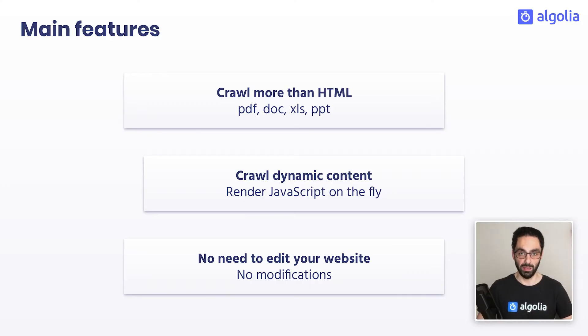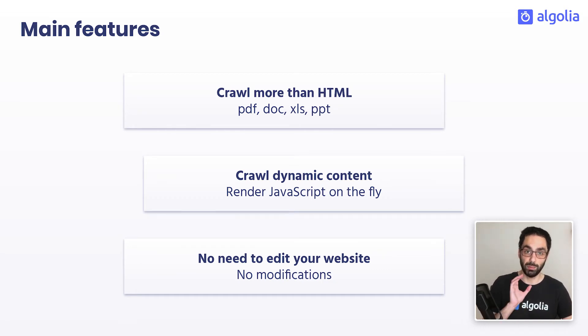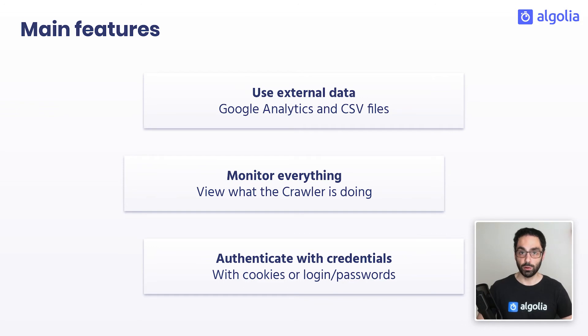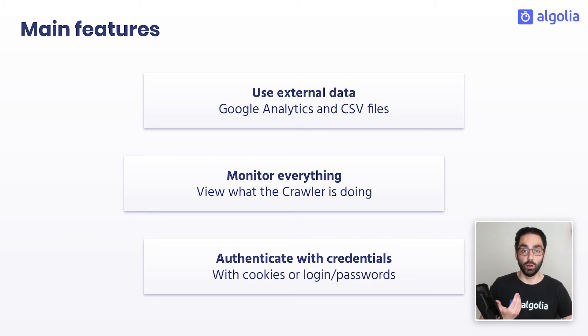Pretty cool. And the crawler has many advanced features. It can crawl more than just HTML pages, like docs, PDFs, and so on. And it's not just about static content — it also works with dynamic content in JavaScript. There's no need to edit your website; if the content you want to crawl is already on your pages, the crawler will be able to find it. On top of that, the crawler is able to use external data, so you can connect to your Google Analytics account or use CSV files to enrich your dataset.